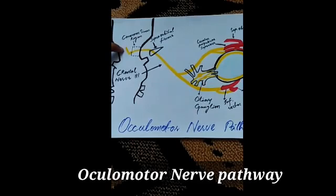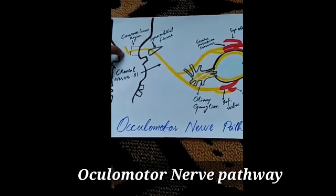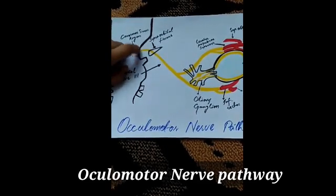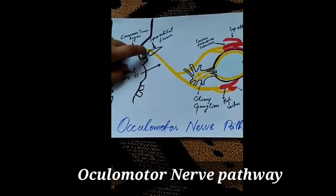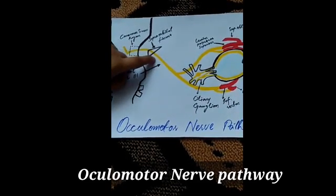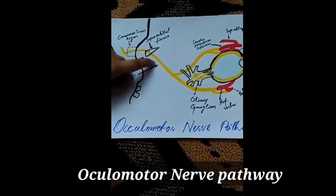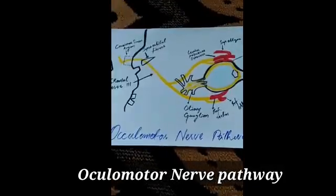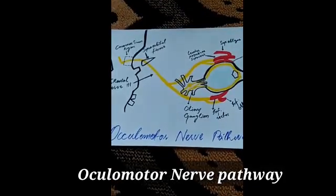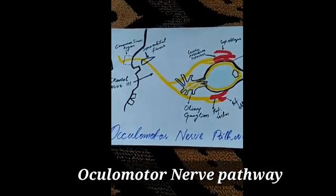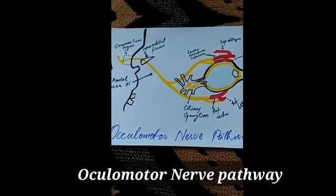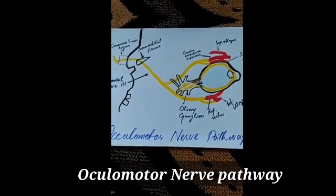The nerve arises here, then passes through the cavernous sinus, then through the superior orbital fissure, and enters into the orbit where it divides into two parts: superior and inferior.